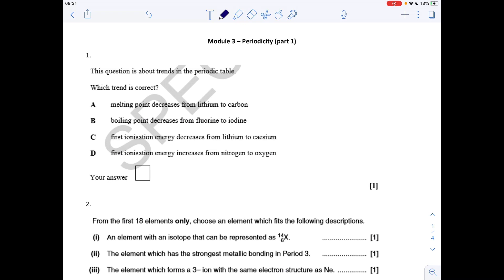So first question, which trend is correct? We'll look at all the options and decide whether they're correct or not. Melting point decreases from lithium to carbon. That's not correct because they actually increase. The boiling points decrease from fluorine to iodine. That's incorrect because the boiling points of the halogens increase as you go down the group.